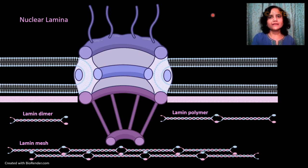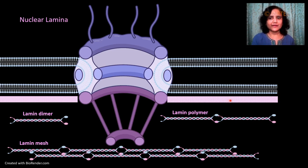The lamina can associate with the inner membrane proteins as well as chromatin within the nucleus. A mutation in lamin proteins can result in progeria syndrome, which is a type of premature aging syndrome in humans, indicating how important this structure is for the cell and for development and aging. It probably affects gene expression in some way, and the morphology of the nucleus is also altered in patient samples.